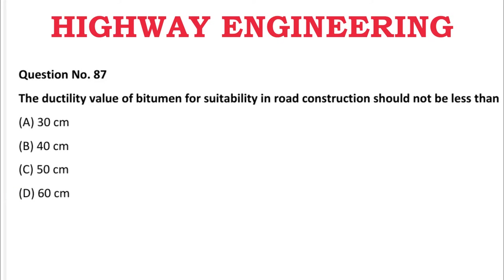Next question: The ductility value of bitumen for suitability of road construction should not be less than — A: 30 cm, B: 40 cm, C: 50 cm, D: 60 cm. The correct answer is C, 50 centimeter.